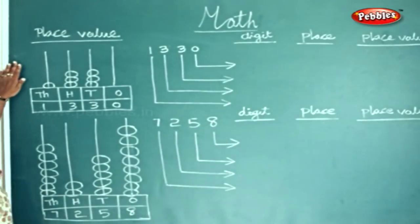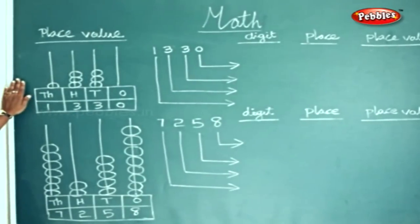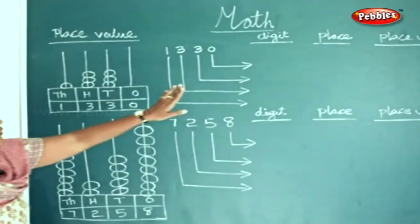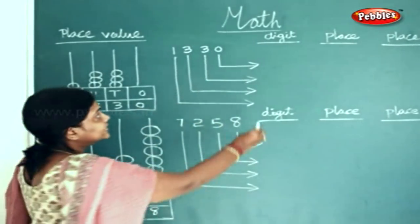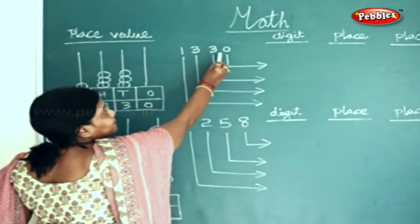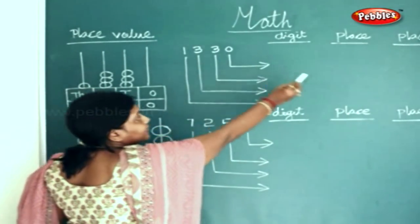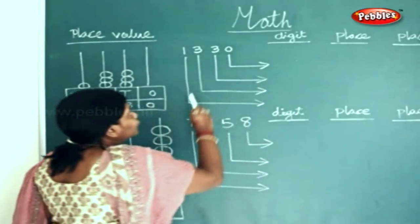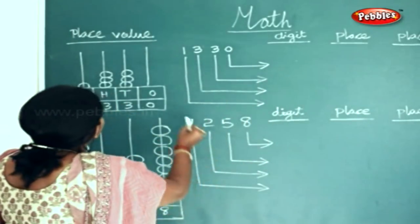Now we will see the place value for the following given abacus. First we will write the digit, then we will write the place, and then we will write the place value for it.